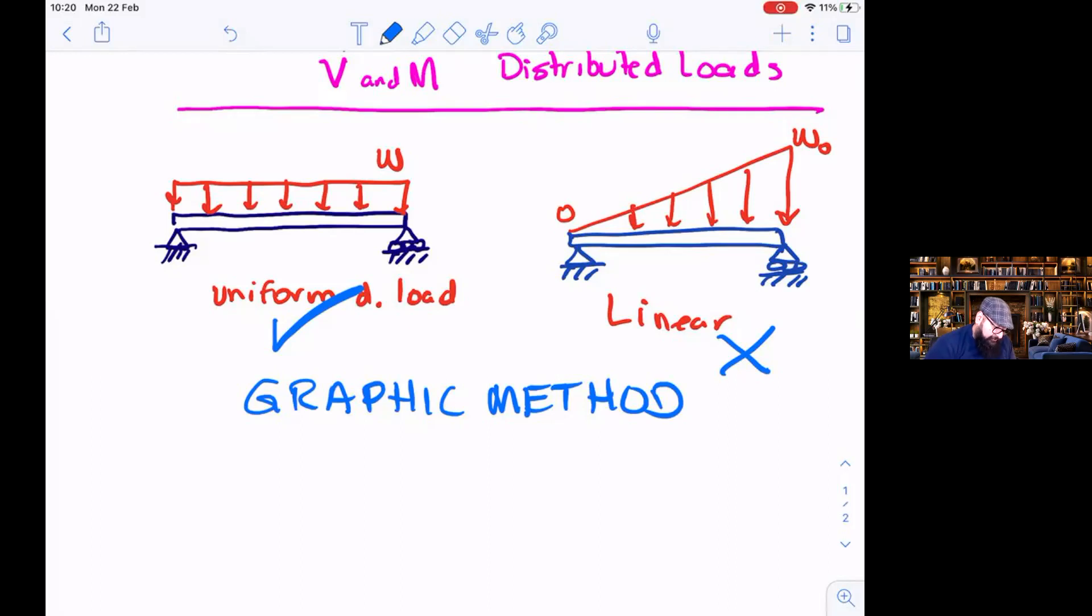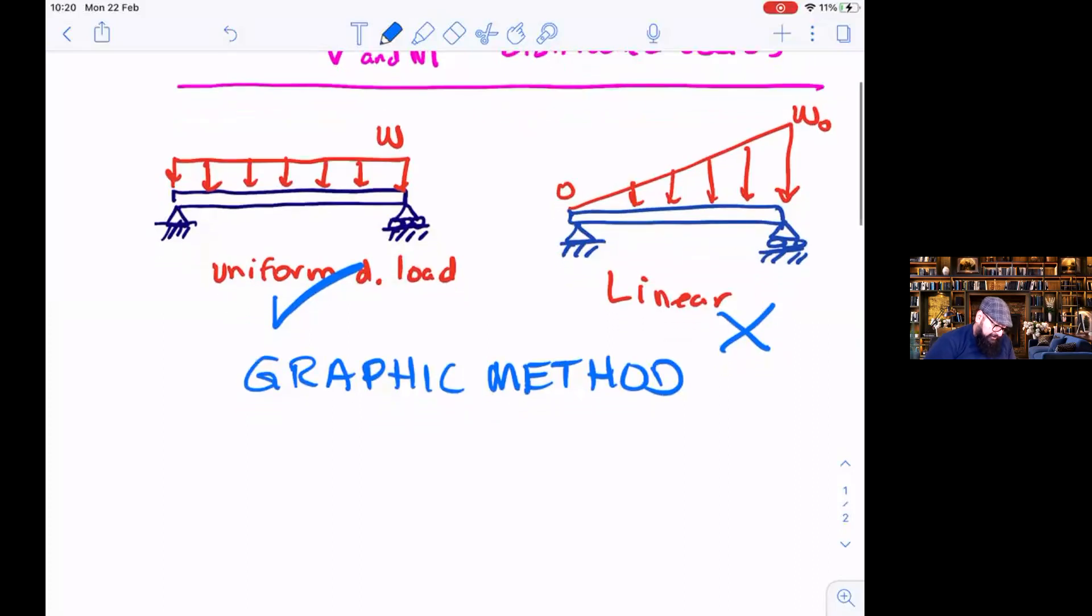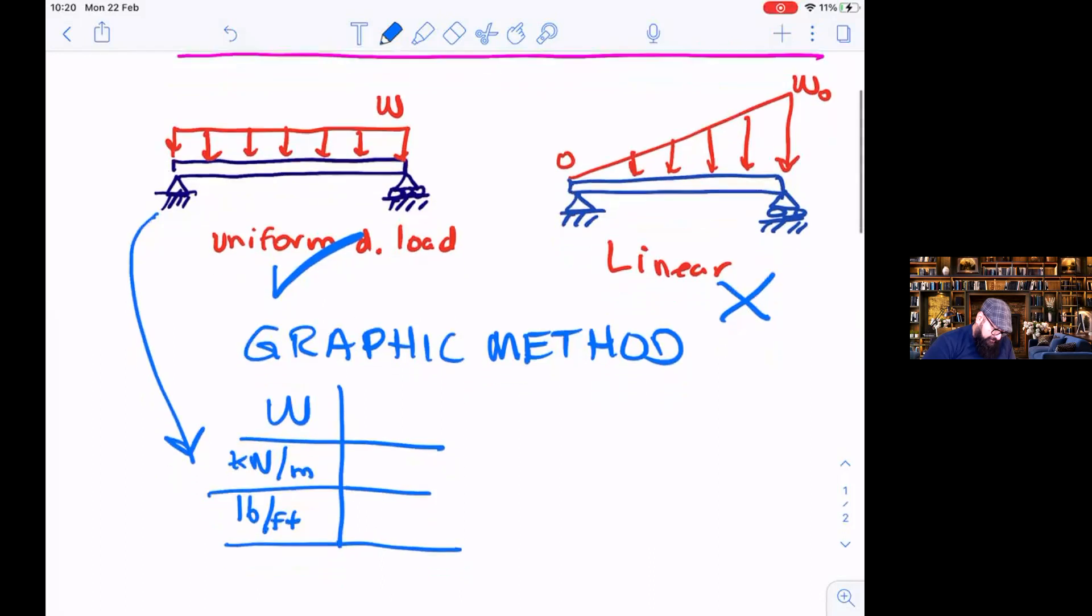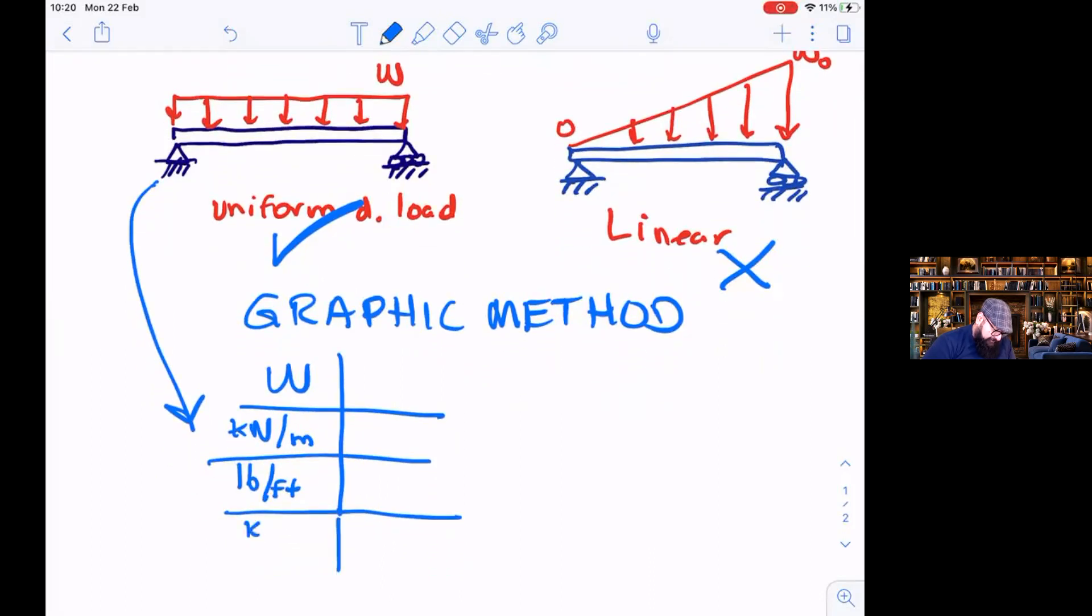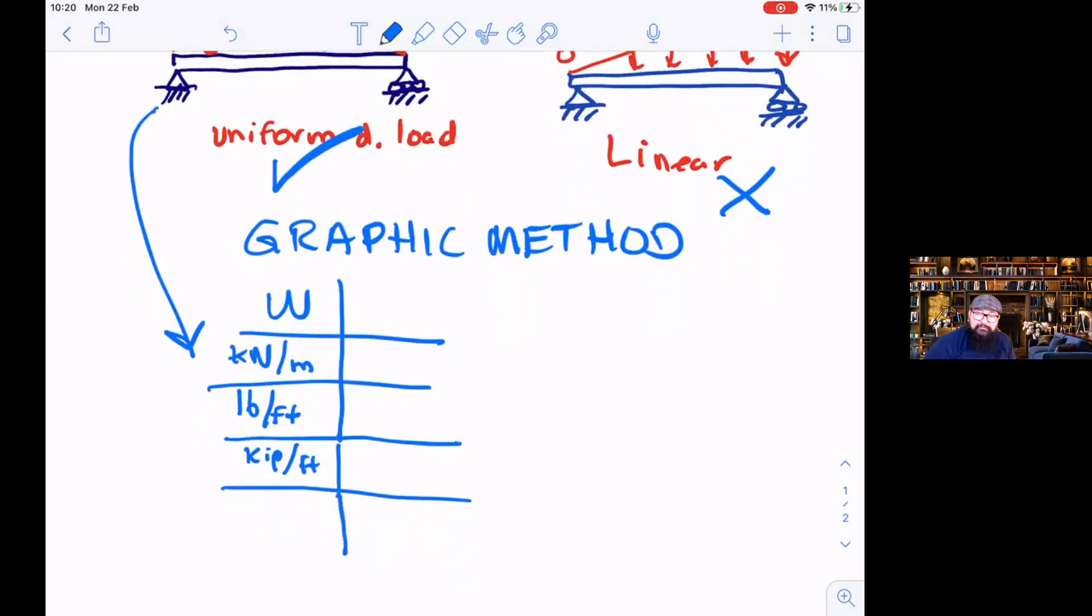So let us deal with this type of load. And how is this load measured? W might be indicated in kilonewtons per meter, in pounds per foot, or kilopounds per foot. Or if we use the Mexican system that some professors like, it's kilograms per meter, and we may get also tons per meter.